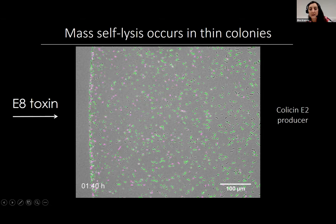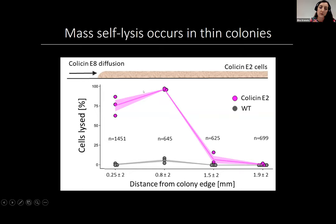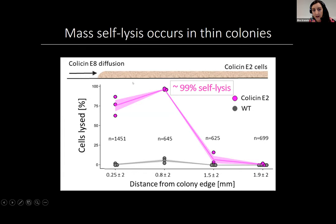We can also quantify this. Plotting percent cells lysed as a function of distance from the colony edge — where competitor toxin first hits — we see peak self-lysis at 99%, with nearly every single cell self-lysing at intermediate distances from the colony edge. Right at the very colony edge, many cells die before they get to self-lyse because toxin concentrations are highest. As we move further into the colony, the self-lysis rate drops dramatically because now cells see much less toxin.